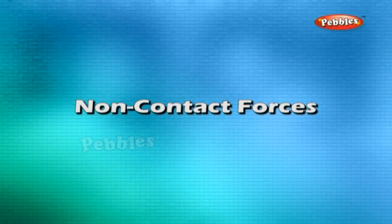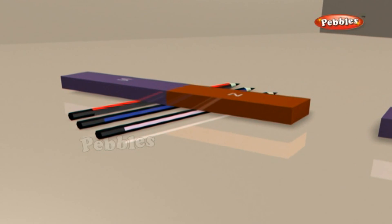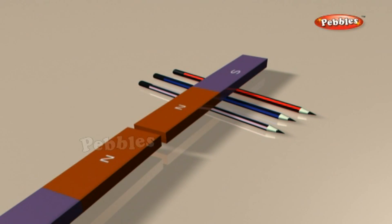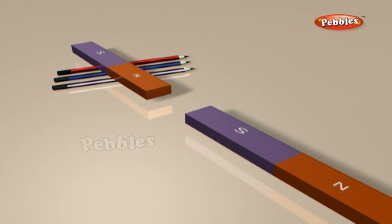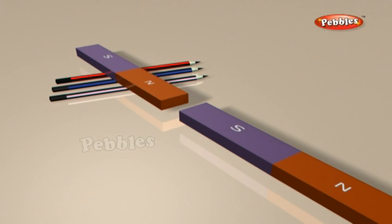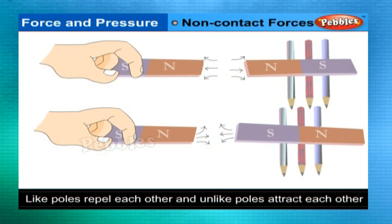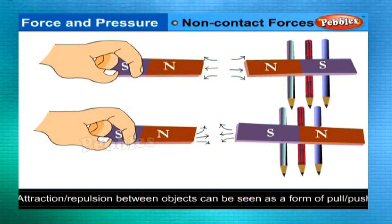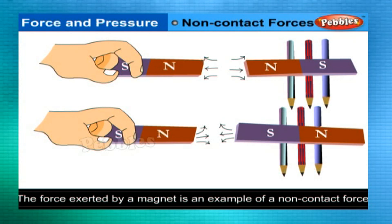Non-contact forces: Take a pair of bar magnets. Place the longer side of one of the magnets over three round-shaped pencils or wooden rollers. Now bring one end of the other magnet near the end of the magnet placed on the rollers, making sure the two magnets do not touch each other. Like poles of two magnets repel each other and unlike poles attract each other. Attraction or repulsion between objects can also be seen as another form of pull or push. A magnet can exert a force on another magnet without being in contact with it — the force exerted by a magnet is an example of a non-contact force.